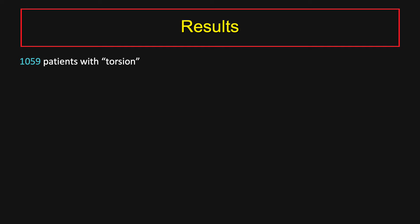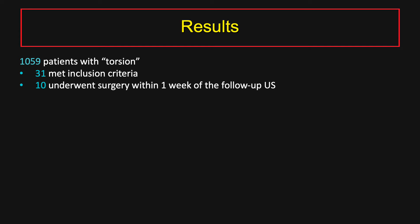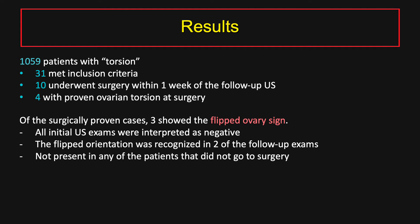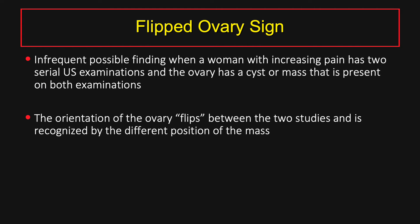The results yielded 1,059 patients with torsion; 31 met inclusion criteria. 10 of these patients underwent surgery within one week of the follow-up ultrasound and four had proven ovarian torsion at surgery. Of the surgically proven cases, three showed the flipped ovary sign. All initial ultrasound examinations were interpreted as negative, and the flipped orientation was recognized in two of the follow-up exams. The average interval time from initial presentation to follow-up ultrasound was 1.7 days. The flipped ovary sign is an infrequent but possible finding when serial examinations show the ovary's orientation has flipped, recognized by the different position of the mass.